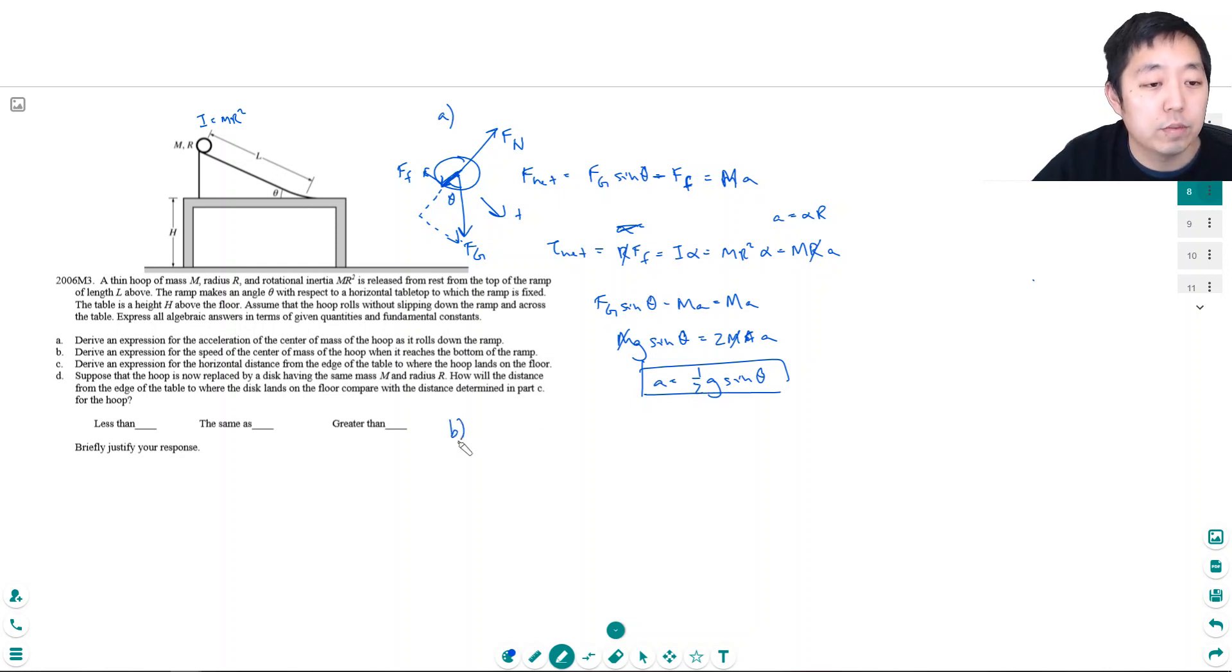Part B: derive an expression for the speed of the center of mass of the hoop when it reaches the bottom of the ramp. You could do this through energy, but since you've already solved for acceleration, you might as well use kinematics. I'll use v squared equals v naught squared plus 2a delta x. The initial velocity is zero since it's released from rest.